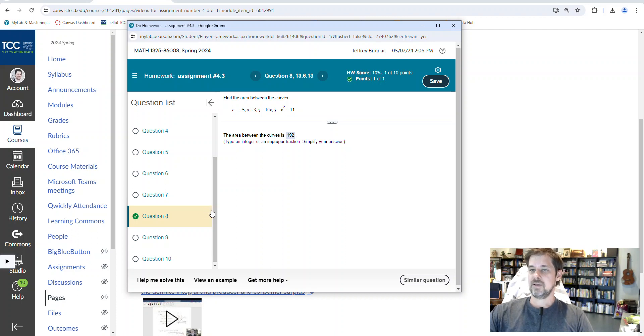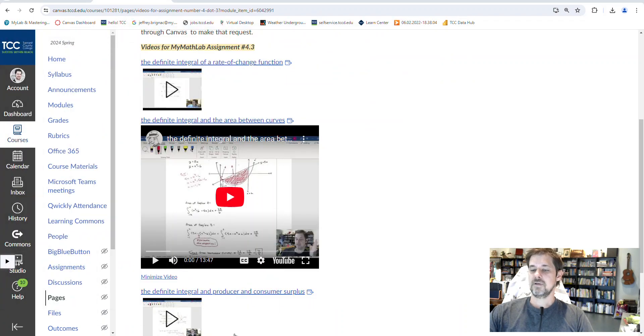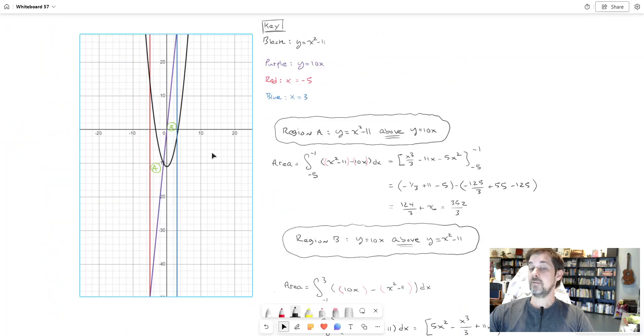Back to this one. One thing we need to find is that in order to calculate the area between curves, we would probably start by looking at the graph. The reason is the setup and procedure depends on which curve is above which other curve. We've got all these curves that intersect and contain area between them in different ways, but the way we do the calculations depends on which curve is above which.